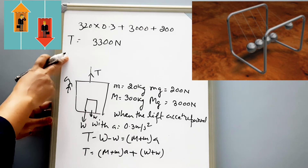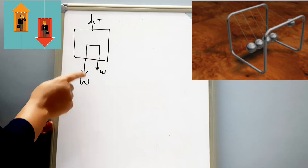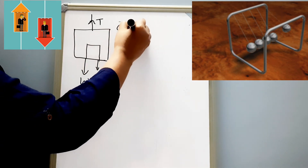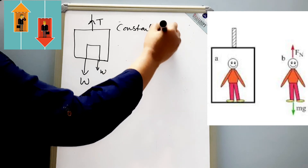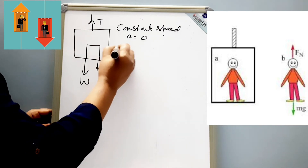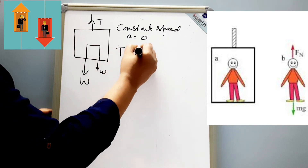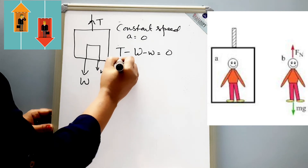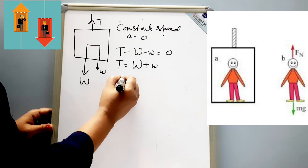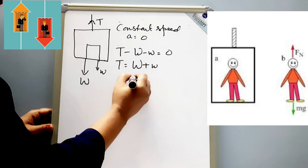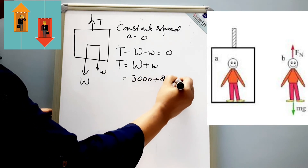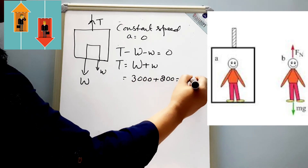Second condition: calculate the tension when the lift travels at constant speed. As we know, when something moves with constant speed, acceleration equals zero. So our equation becomes: T minus W minus w equals 0, meaning tension equals the weight of the lift plus the weight of the crate. Weight of the lift is 3000 N and weight of the crate is 200 N, so tension equals 3200 N.